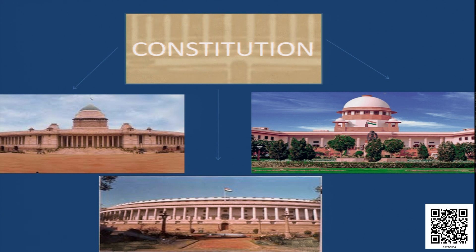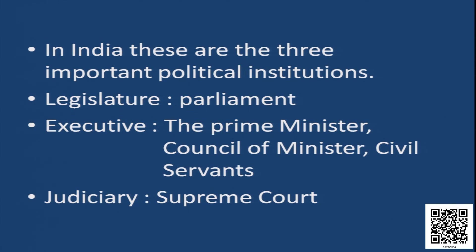In our country, these are the three major institutions — the President's House, which is part of the executive body; the Supreme Court; and the Parliament. Above these three institutions are the constitutions, whose rules and regulations are abided by these political institutions. In India, these are the three major political institutions: the Legislature — the Parliament; the Executive — the Prime Minister, Council of Ministers, and Civil Servants; and the Judiciary — the Supreme Court.